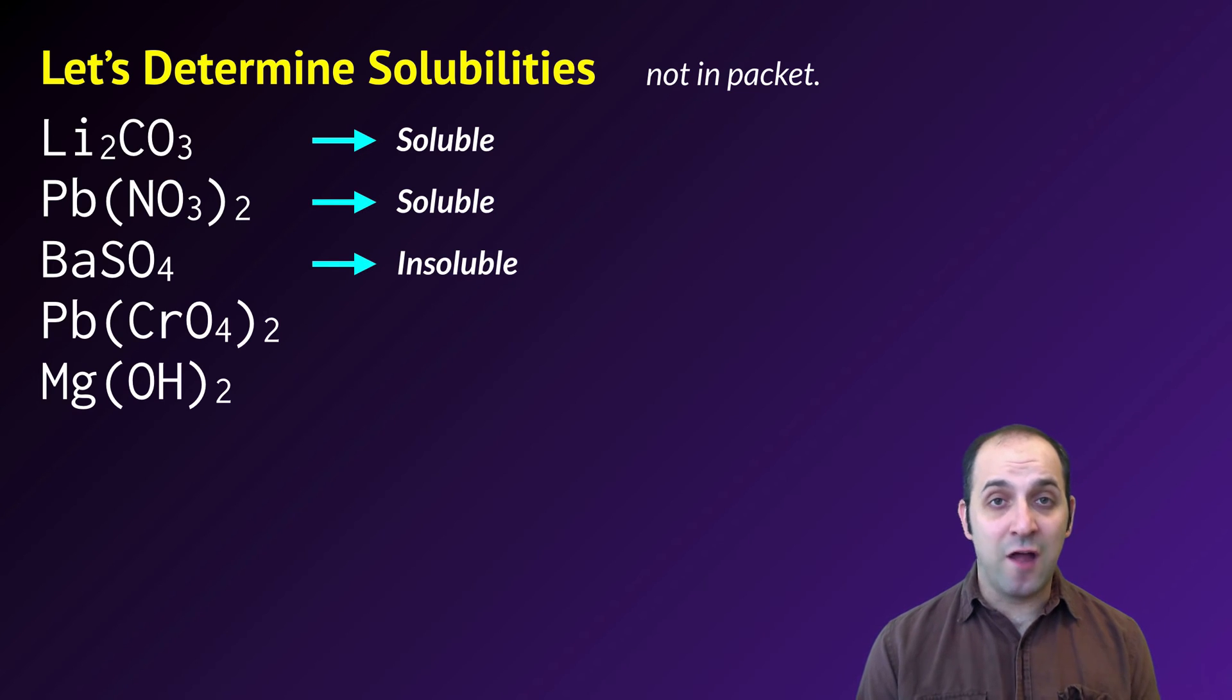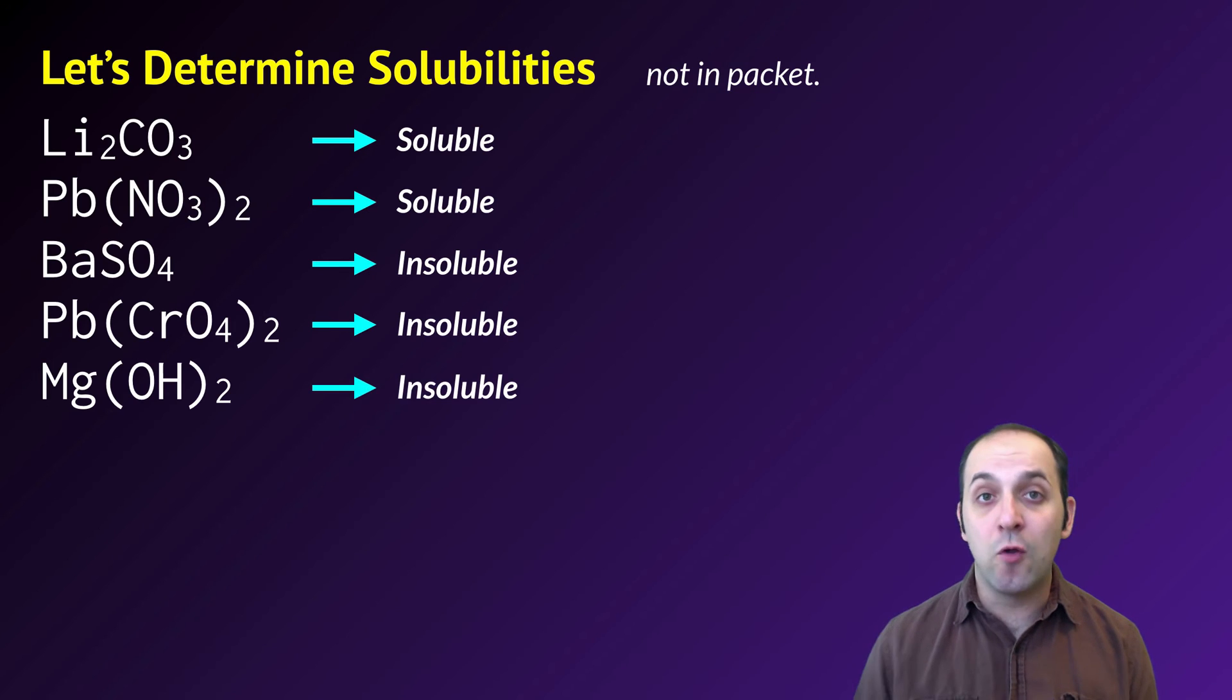Barium sulfate is insoluble. Sulfates are generally soluble, but there are some exceptions, and the barium 2 plus ion, as the cation in that compound, is one of those exceptions, which makes it an insoluble compound. Lead 2 chromate is insoluble. Chromates are generally insoluble, and lead 2 is not an exception. And magnesium hydroxide is insoluble for the same reason. Hydroxides are generally insoluble, and magnesium is not an exception. Do these make sense? If they don't, take a moment and write down any questions that you have before we move on.